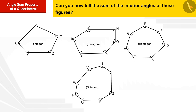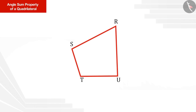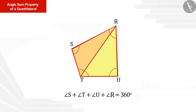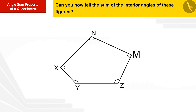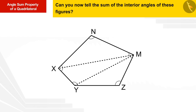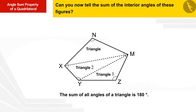Can you now tell the sum of the interior angles of these figures? Let's try with the help of an activity. We have found the sum of all the angles of a quadrilateral by dividing it into two triangles. In the same way we can divide the pentagon into triangles. If we draw a diagonal from any vertex of the pentagon, say M, then this pentagon is divided into three triangles.